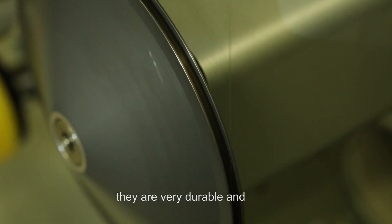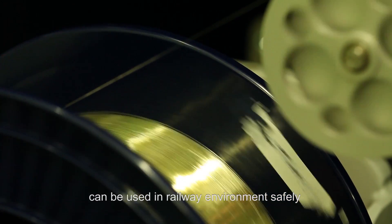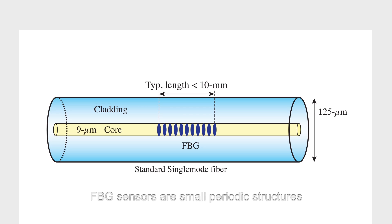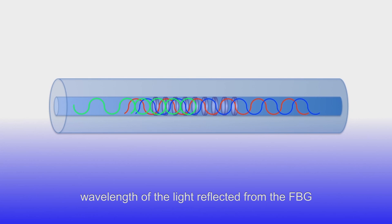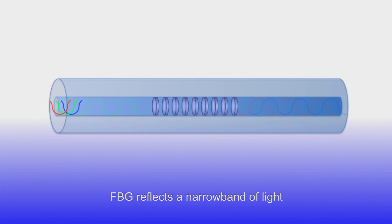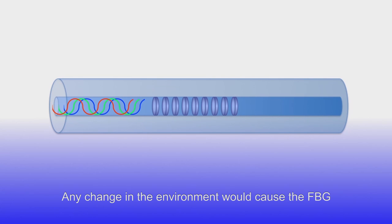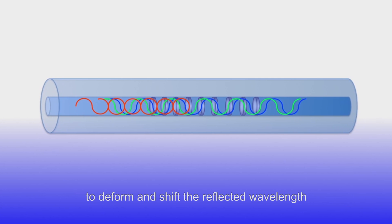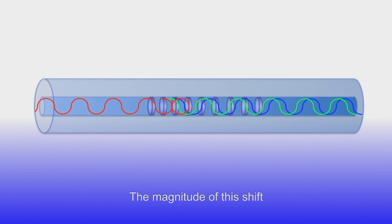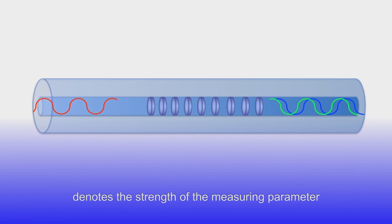FBG sensors are small periodic structures created inside the 9 micrometer core diameter of standard optical fibers. Measurement information is encoded in the wavelength of the light reflected from the FBG. FBG reflects a narrow band of light. Any change in the environment would cause the FBG to deform and shift the reflected wavelength. The magnitude of this shift denotes the strength of the measuring parameter.